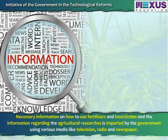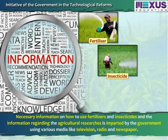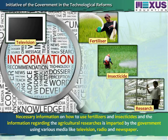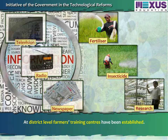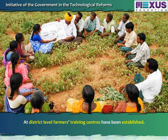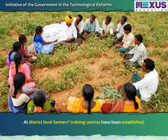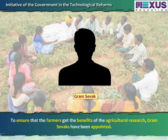The government gives economic and technical aid to farmers to purchase subsidies. Necessary information on how to use fertilizers and insecticides, and information regarding agricultural research, is imparted by the government using various media like television, radio and newspaper. At district level, farmers' training centers have been established.